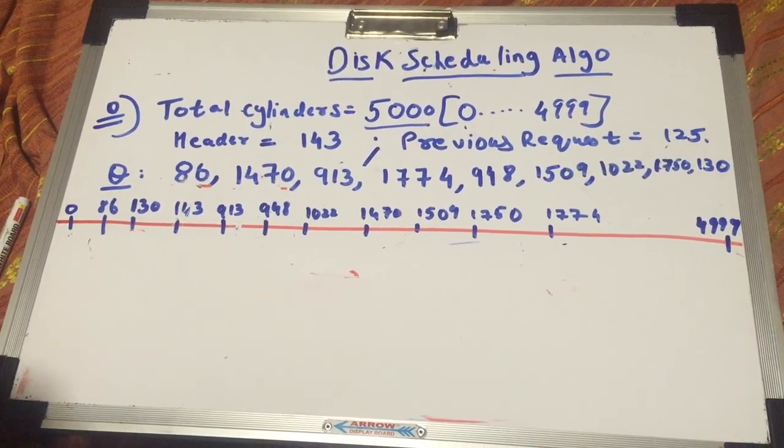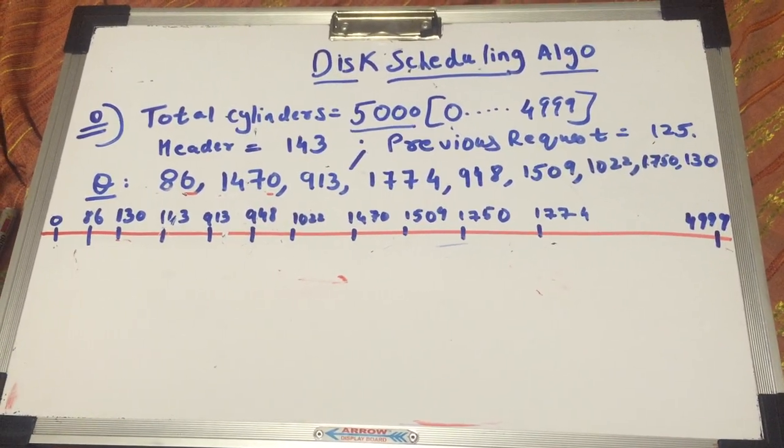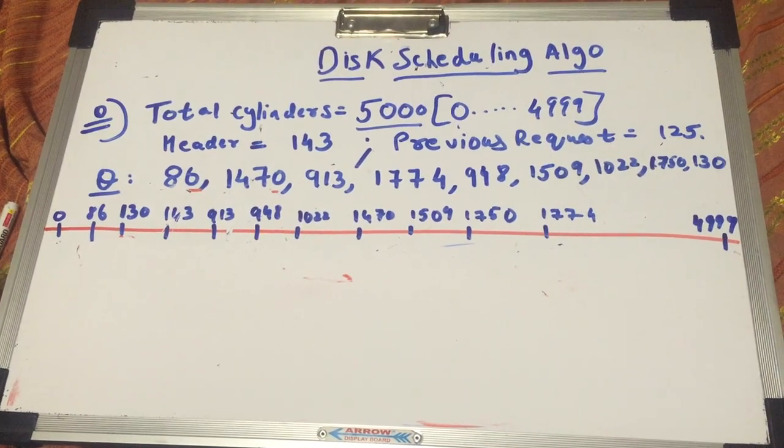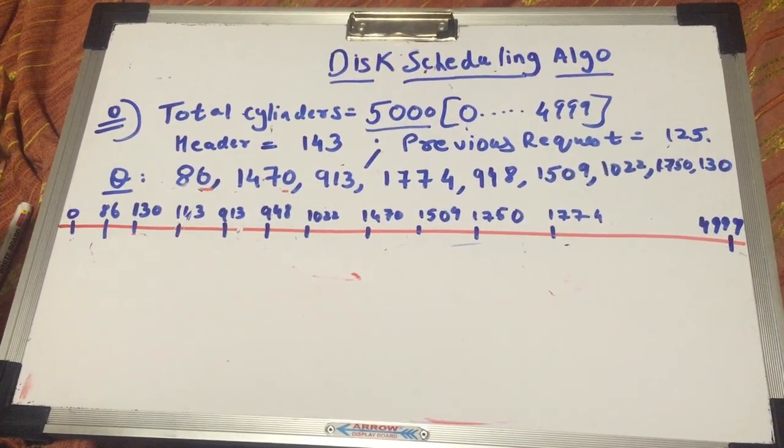Now let's have a look at the C-LOOK algorithm. Now like in C-SCAN, what the difference between SCAN and C-SCAN was that our direction of our head is fixed. Similarly in LOOK, our direction of head is fixed. But here also we avoid the extremes.